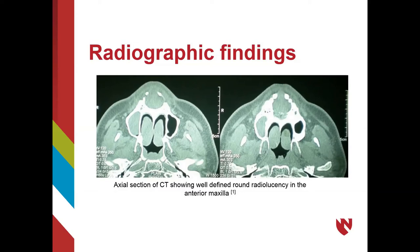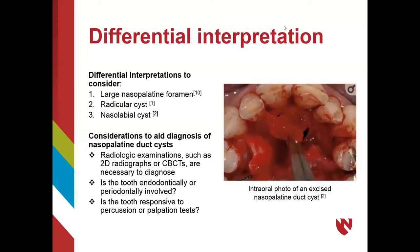Differential diagnoses for the nasal palatine duct cyst should include a large nasal palatine foramen, radicular cyst, and nasolabial cyst. Other considerations to aid in the definitive diagnosis should include radiographic examination, such as two-dimensional radiographs or a CBCT. Key questions to address include whether the lesion is near an endodontically or periodontally involved tooth, or if the tooth is responsive to percussion or palpation tests. The importance of a correct diagnosis is evident by the intraoral photo showing a nasal palatine duct cyst being removed after a flap was done in the anterior palate.